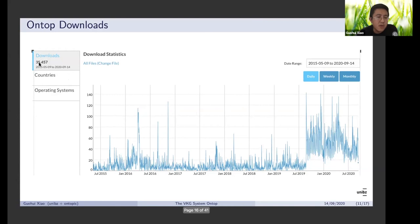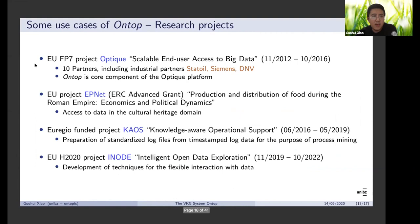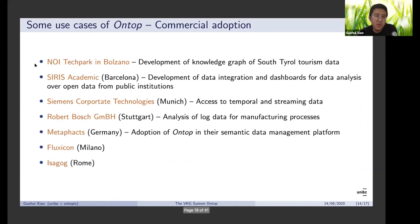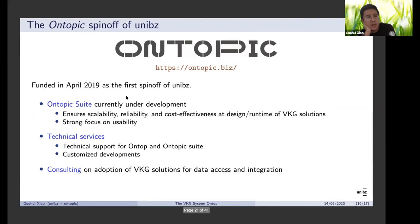The system has been downloaded many times — I just took a screenshot before the meeting, and it has already been downloaded more than 35,000 times and used in many use cases. There are quite a few research projects based on OnTop, including several European projects and some commercial adoption. We recently published a paper together with Bosch at ESWC, and there's another interesting work together with a university analytical platform. Last but not least, we set up a spin-off of the university last year — the first spin-off of the university — where we do additional development and offer technical services and consulting, making the development much more sustainable. That's it — I'm looking forward to questions.